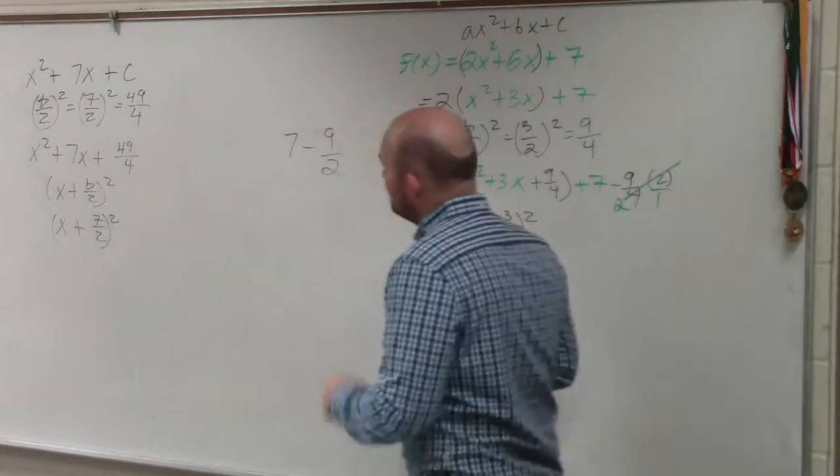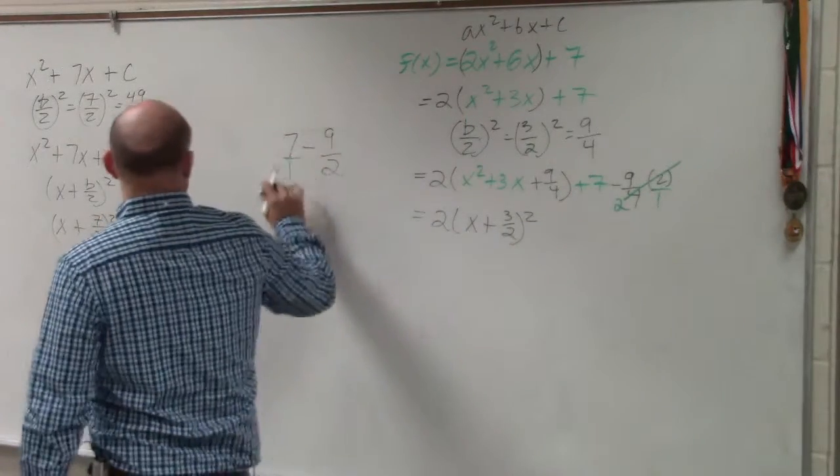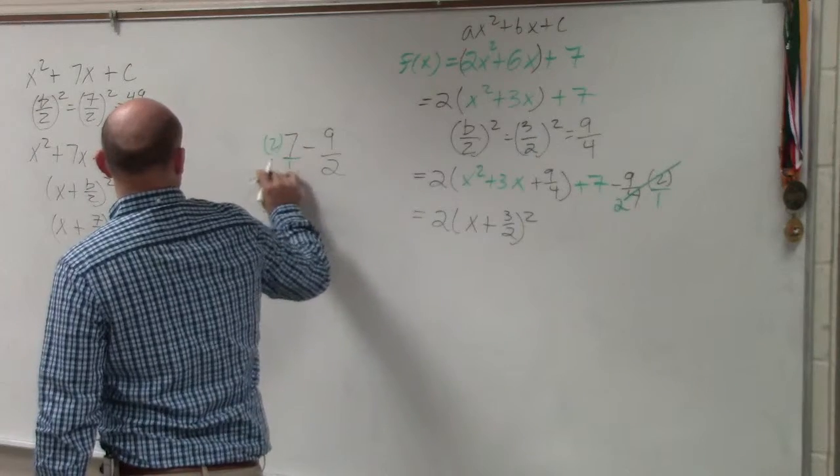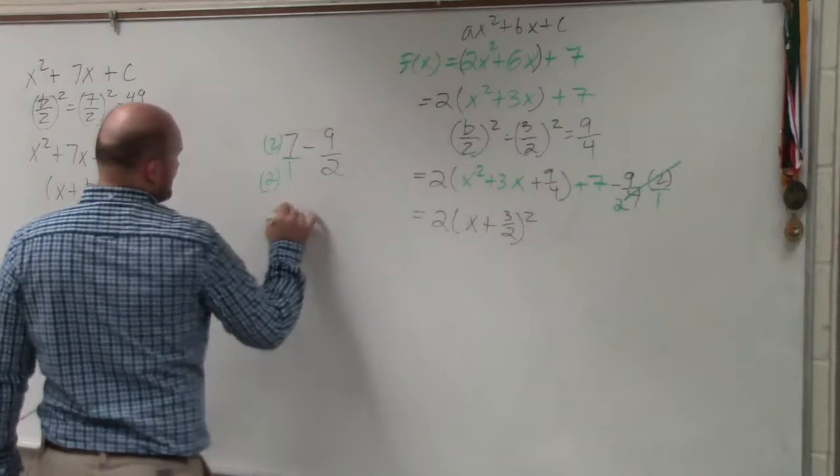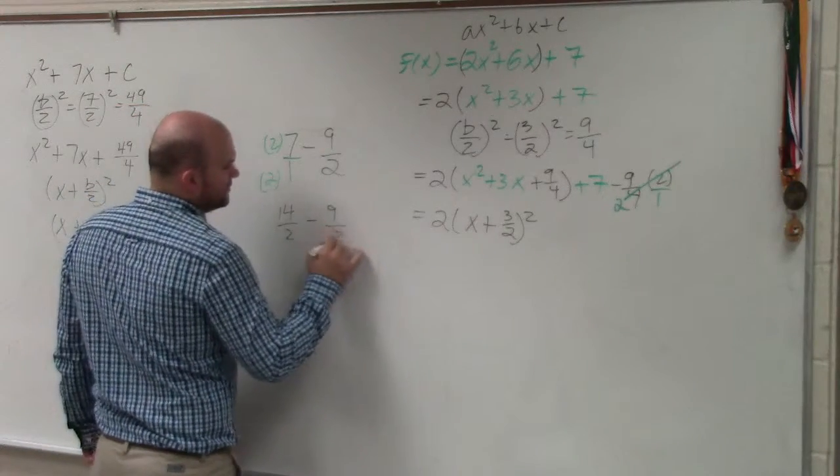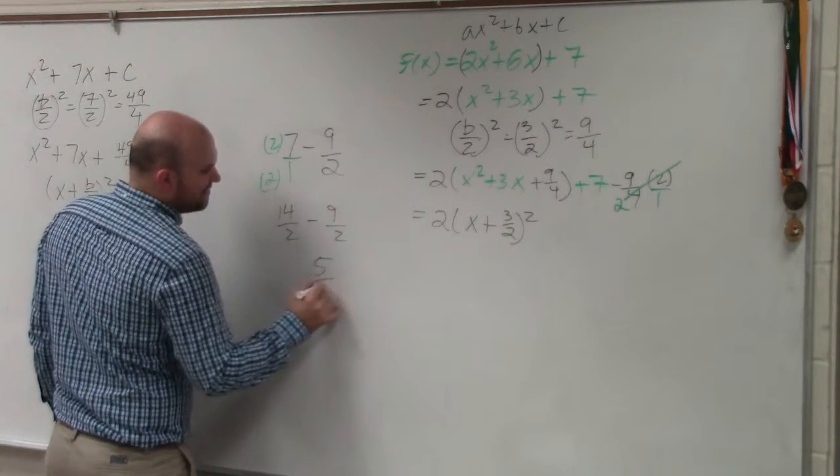So to subtract 7 minus 9 halves, you convert 7 to 7 over 1. Multiplying to get common denominators, you'd have 14 over 2 minus 9 over 2, which is equal to 5 over 2.